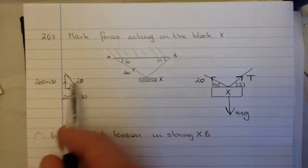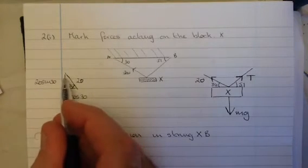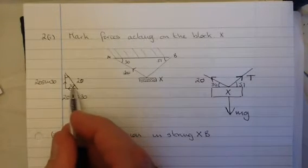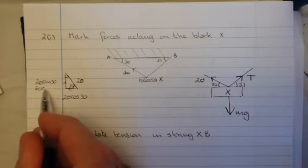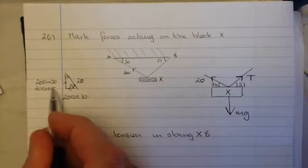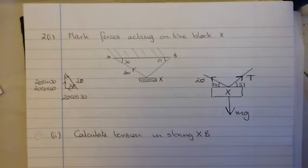Now, sometimes some books teach us that because this angle up here is 30, 90, that would be 60. You can also write that one as 20 cos 60. It doesn't really matter, they're exactly the same size. Okay, we do the same with the T force.